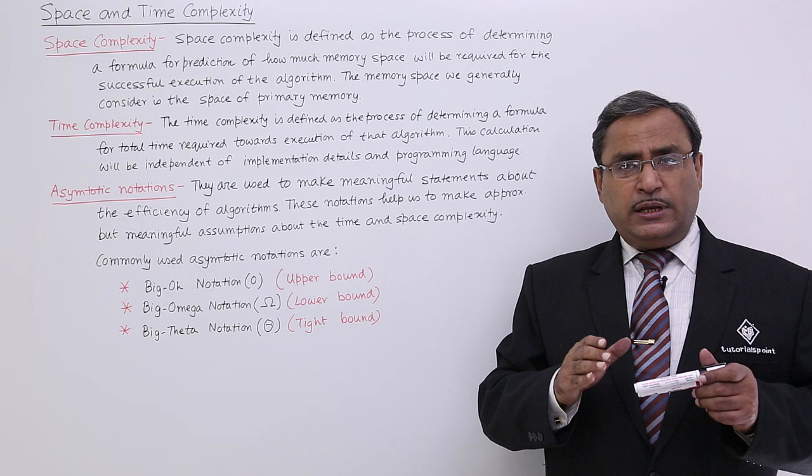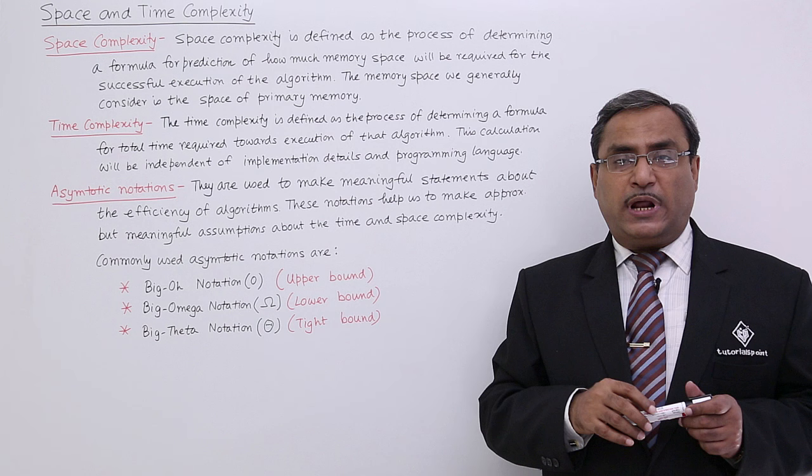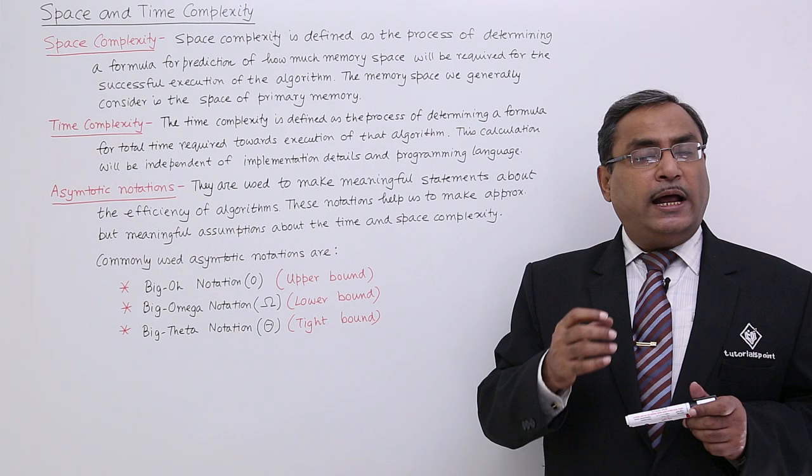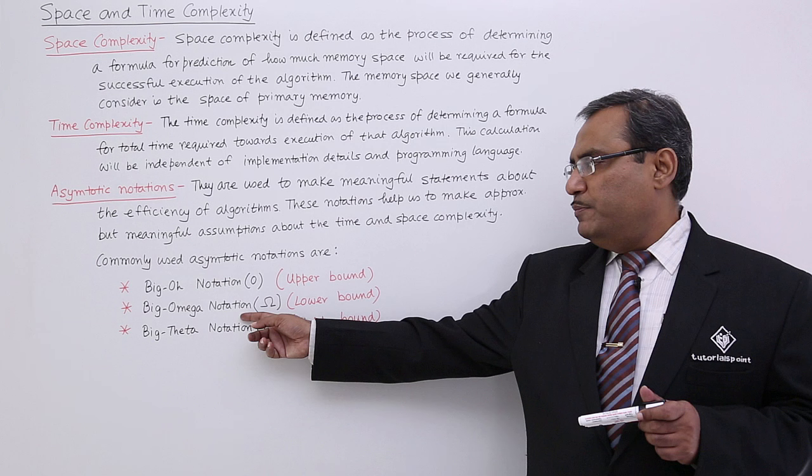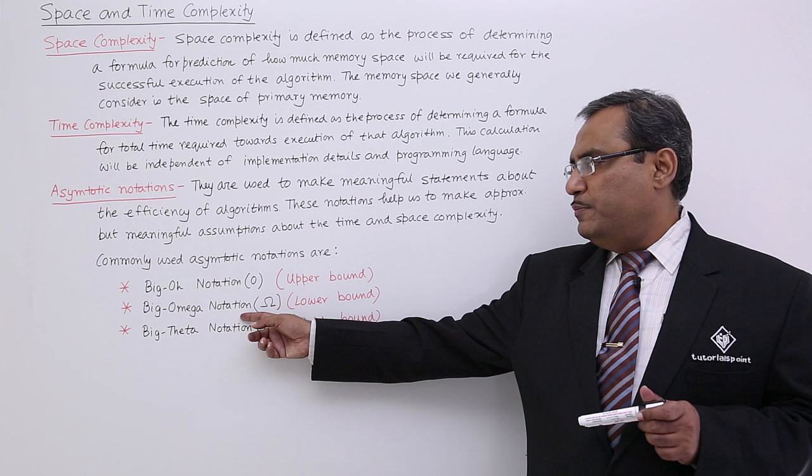Complexity — here we are denoting the time complexity — means how many times the most prime operation within the algorithm is carried out, and that will give the upper bound, the lower bound, and the tight bound. In the next videos, we will be discussing Big O notation, Big Omega notation, and Big Theta notation. Please watch those videos, because they will be in continuation of this particular topic. Thanks for watching.